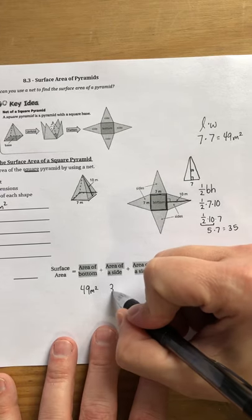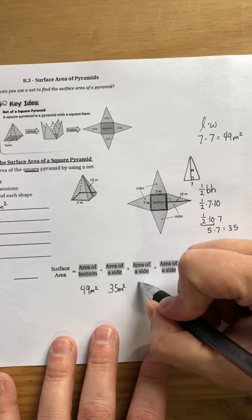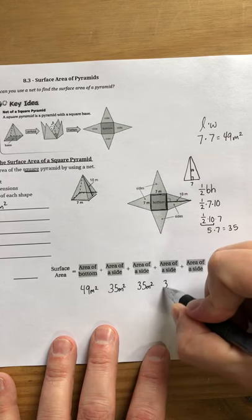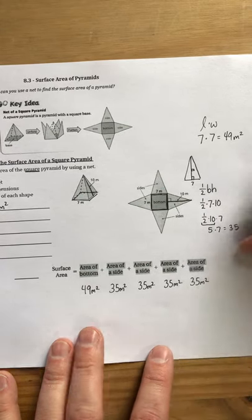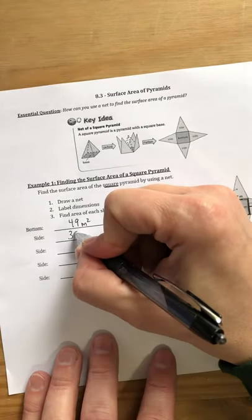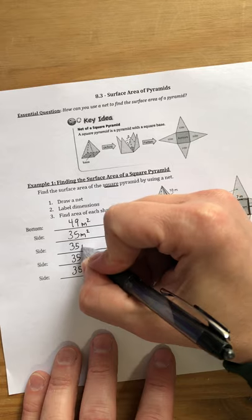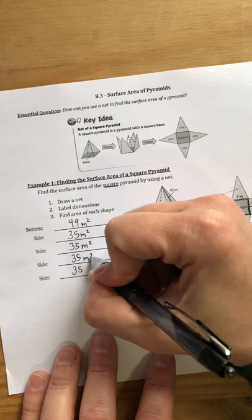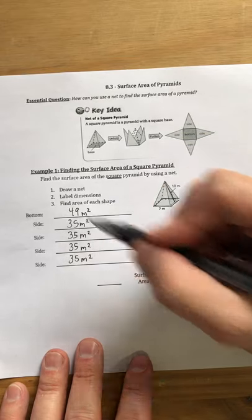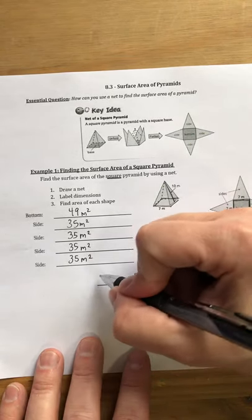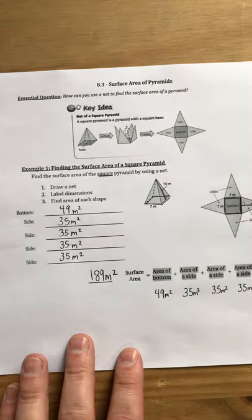Now, the good news is because this is a square prism, once I know that one of those lateral faces is 35 meters squared, I know all of them are 35 meters squared. So I can write that in very quickly and know that to get my final answer of my surface area, I simply need to add up 35, 35, 35, 35, and 49. So I'm going to get an area of 189 meters squared. All right? Not too bad, right?